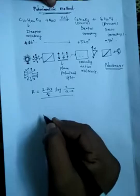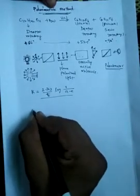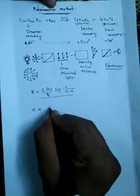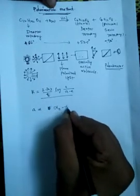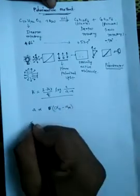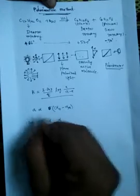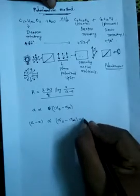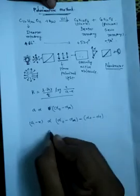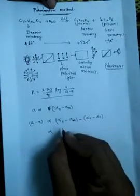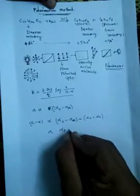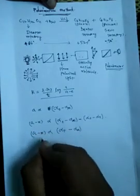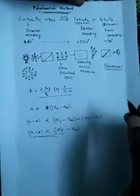Here, 'a' is directly proportional to (alpha_0 minus alpha_infinite), and 'a minus x' is directly proportional to (alpha_t minus alpha_infinite). The alpha_0 terms cancel and we get (alpha_t minus alpha_infinite). So 'a minus x' is proportional to (alpha_t minus alpha_infinite), where these are the angles of rotation.